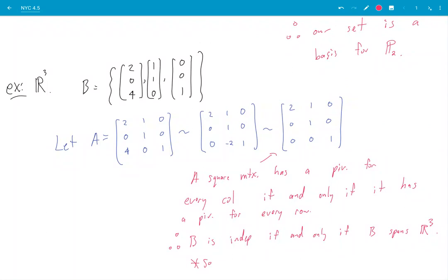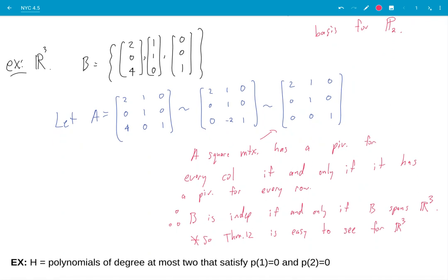So what am I saying? So theorem 12 is easy to see for R3. Or maybe I should say the truth of theorem 12 is easy to see for R3.